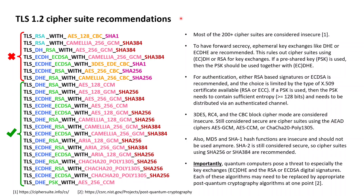Starting with TLS 1.2, we know from a previous lesson that a total of more than 200 cipher suites are defined. What you see here on the left is just a small selection of TLS 1.2 cipher suites compiled to demonstrate the variety of different types available. Nowadays, most of the more than 200 TLS 1.2 cipher suites are considered insecure for one or multiple reasons.